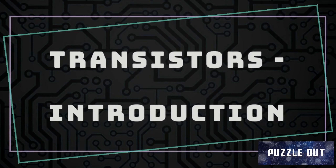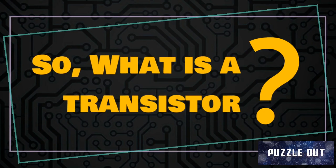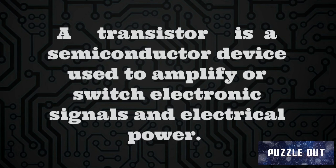Hi, welcome to Puzzle Out. In this video we are going to learn about the basic electronic component called transistors. According to definition, a transistor is a semiconductor device used to amplify or switch electronic signals or electrical power.